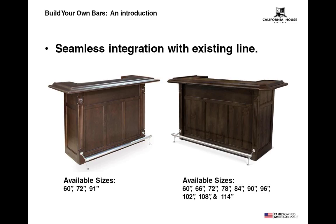With the new Build Your Own Bar system, all straight bars including the NAPA are available in 60-inch, 66-inch, 72-inch, 78-inch, 84-inch, 90-inch, 102-inch, 108-inch, and 114 inches, giving homeowners the ability to precisely fit the space they have available. From the front, you will notice only two aesthetic changes: one is the clipped corners on the bar top — we changed all standard BYOB tops to a clipped corner hardwood elbow rail for safety. The other change is that BYOB standard bars are now 2 inches deeper overall.